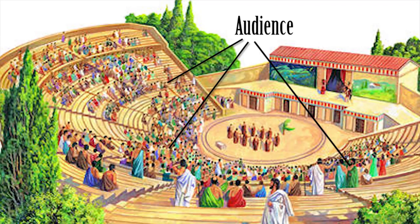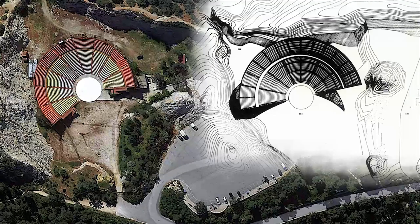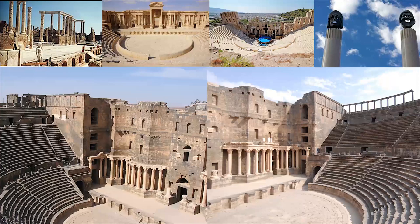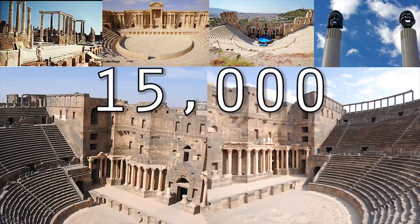The audience sat on rows of stone benches built up on the side of a hollow in a hill. So theatres could not just be built anywhere — they had to be built where the landscape was suitable. A typical theatre could seat 15,000 people. Greek plays involved songs, chant, and dance together with musical accompaniment.